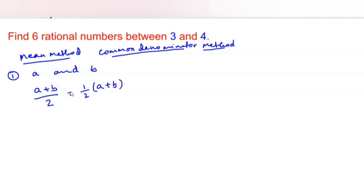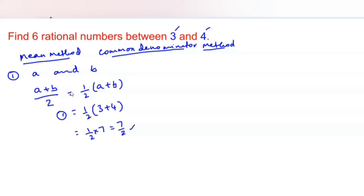Here, think of a and b as our given numbers 3 and 4. The first rational number we are going to find is half into 3 plus 4, which gives half into 7, that is 7 by 2. So your first rational number is 7 by 2.